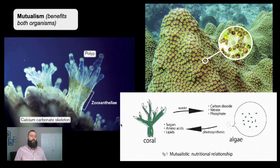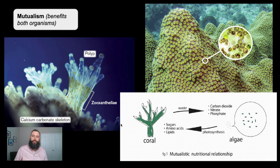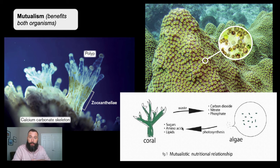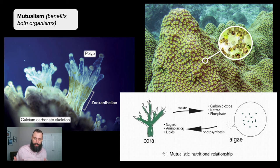Coral bleaching occurs when ocean temperatures rise too much. The coral polyp will eject the algae in a last-ditch effort to continue living — but when that happens, the coral dies because it can no longer get the sugars, amino acids, and lipids it needs. The coral reef loses its green pigment and turns into that bone-white calcium carbonate skeleton, and the coral reef is dead.